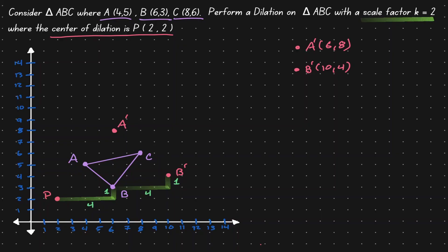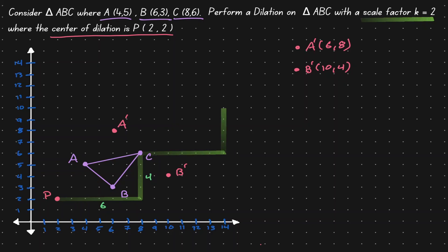Let's clean this up and do the same with point C. Let's not look at the diagonal distance from P to C, but let's look at the horizontal distance and the vertical distance. Starting at P and going towards C, we are moving six units to the right and four units up. So starting at C, let's repeat the same movement: six units to the right and four units up. At this location we will find C prime. Now let's define our triangle A prime, B prime, C prime.